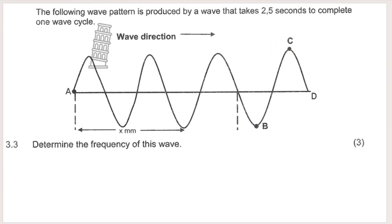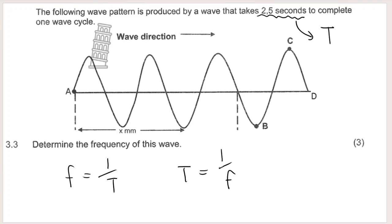Question 3.3 continued — determine the frequency of the wave. The period T = 2.5 seconds. Frequency = 1 ÷ period (this is on your formula sheet). So frequency = 1 ÷ 2.5 = 0.4 Hz. Remember your unit — hertz.